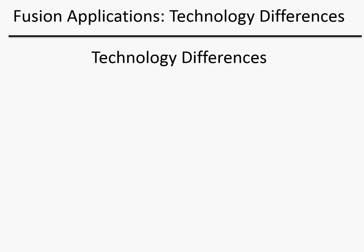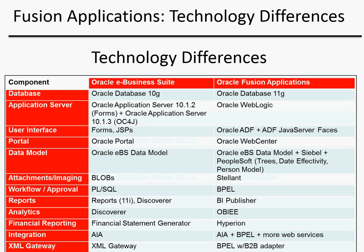This final slide provides an easy way of comparing the different technologies between Oracle E-Business Suite and Oracle Fusion Applications. The database is still driven by Oracle technologies. Oracle Database 10g was used for the Oracle E-Business Suite, while Oracle Fusion Applications out of the box uses Oracle Database 11g and certainly will use Oracle Database 12c in the future.